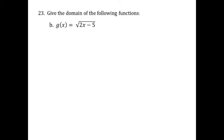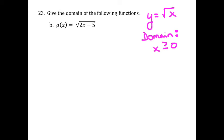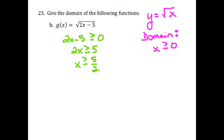In this one, notice that we have a square root function. If I think back to my parent function, y equals square root of x, the domain for that function is x greater than or equal to 0. We're going to take the expression underneath the square root, 2x minus 5, and say that must be greater than or equal to 0, because you can't square root negative values. Solving: 2x is greater than or equal to 5, so x is greater than or equal to 5 halves. And that is the domain for this function.